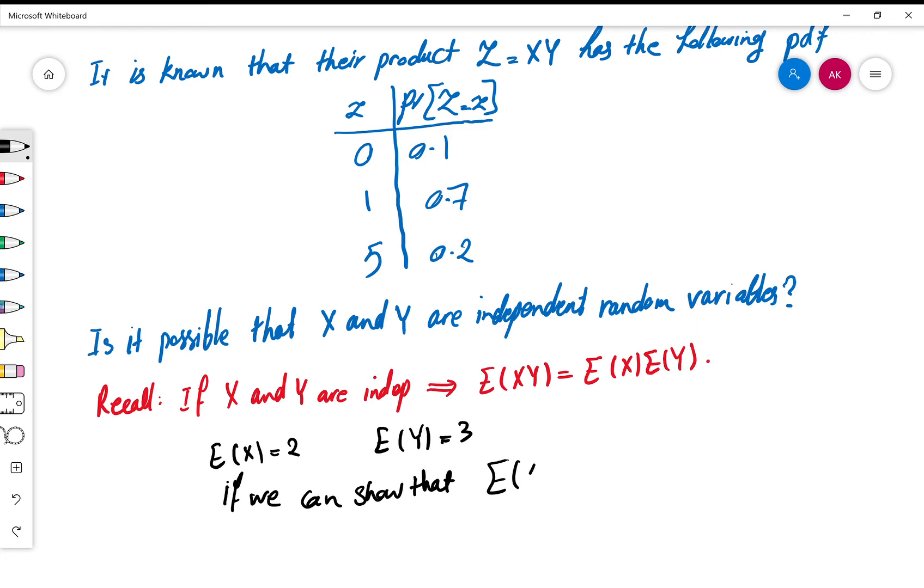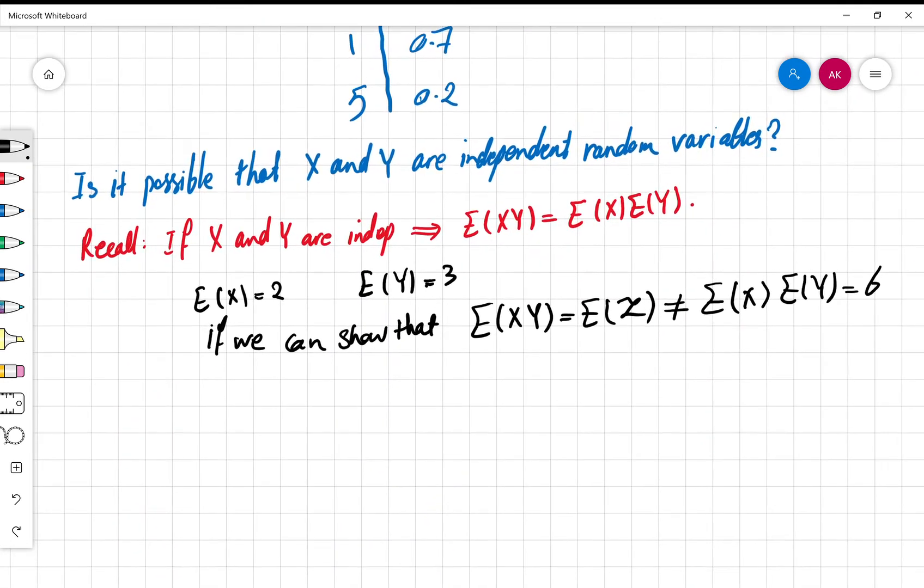...E(XY), which in this case is just E(Z), is not equal to E(X) times E(Y)—which means it's not equal to 6—then we can conclude that X and Y are not independent random variables.